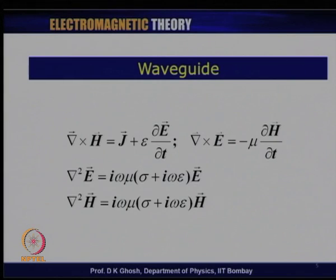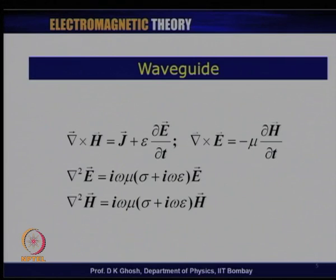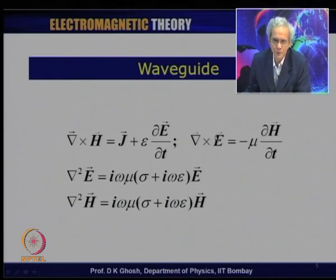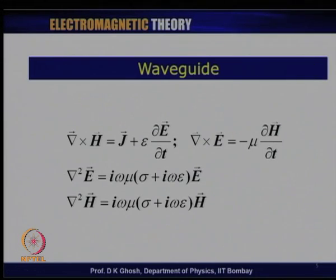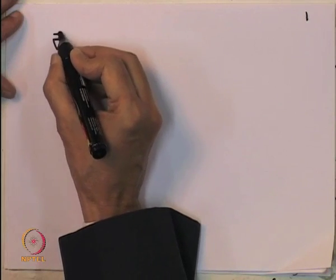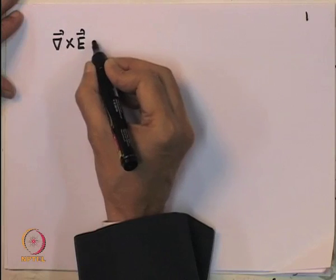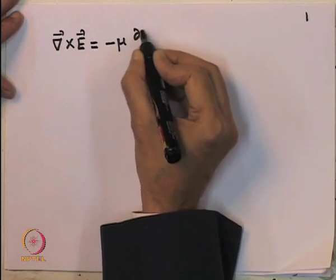Let us repeat the standard equations we have been talking about, namely Maxwell's equations. We will primarily be talking about the two curl equations: del cross H equals J plus epsilon dE/dt, and del cross E, that is Faraday's law, is minus mu dH/dt. Of course, del dot H equals del dot E equals zero. Starting with del cross E equals minus mu dH/dt, since the time dependence is e to the power i omega t, d/dt is the same as multiplying by i omega.